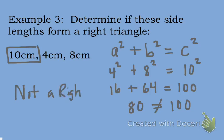We are going to ask you to explain how you know and state that in a sentence. So we could say these dimensions do not form a right triangle because the two legs squared is not equal to the hypotenuse squared.